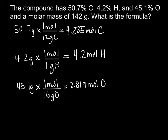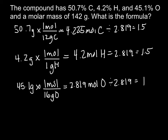The smallest value is 2.819, so I divide each answer by that: 4.225 ÷ 2.819 = 1.5, and 4.2 ÷ 2.819 = 1.5, and 2.819 ÷ 2.819 = 1. Since 1.5 is not close enough to round to 2, I multiply each by 2 to get whole numbers: 3 carbons, 3 hydrogens, and 2 oxygens. The empirical formula is C3H3O2.